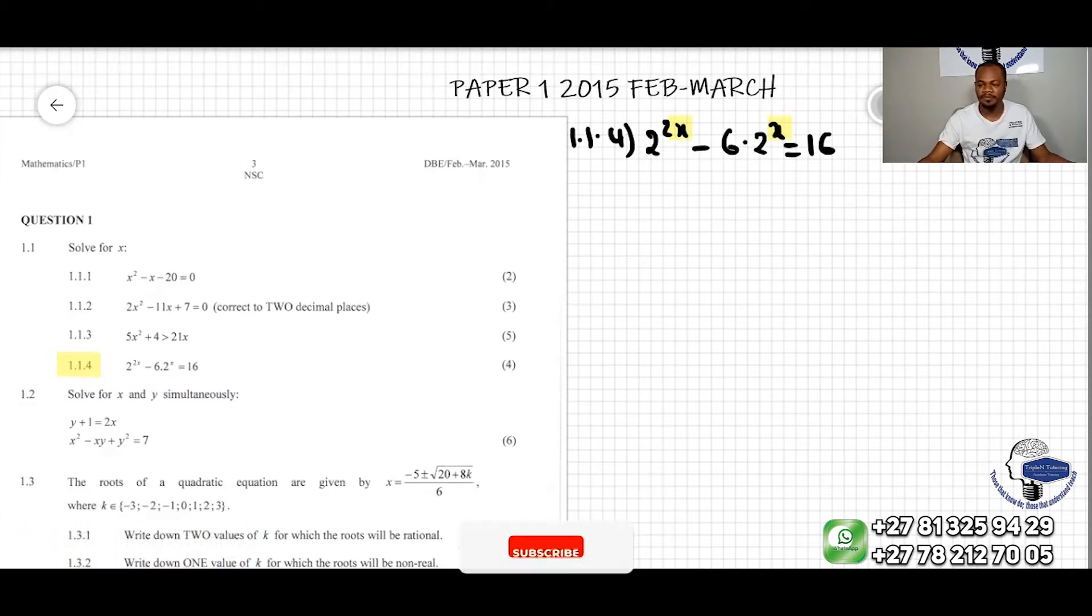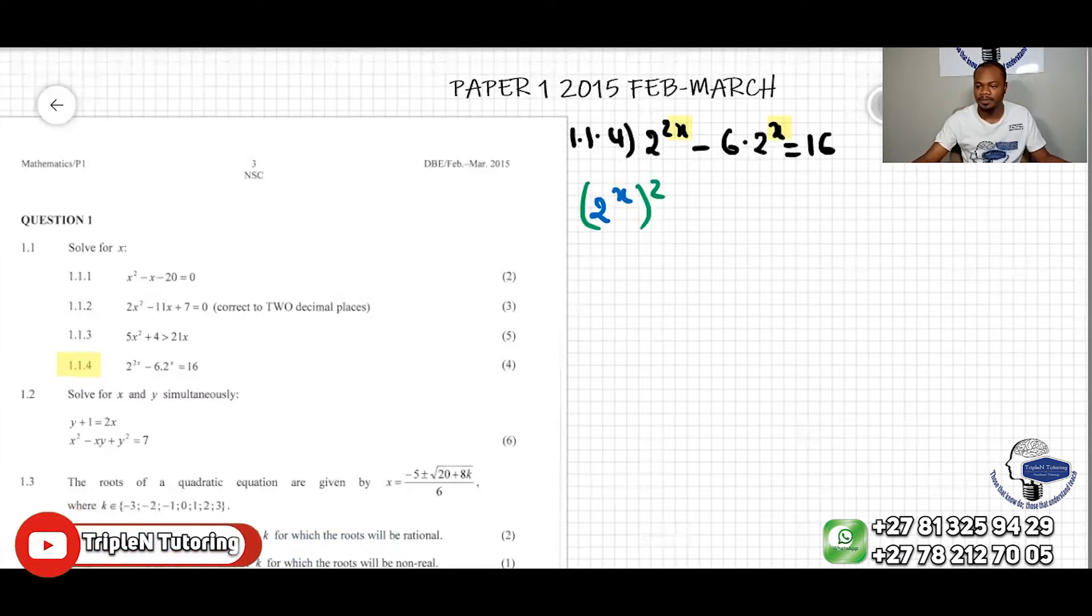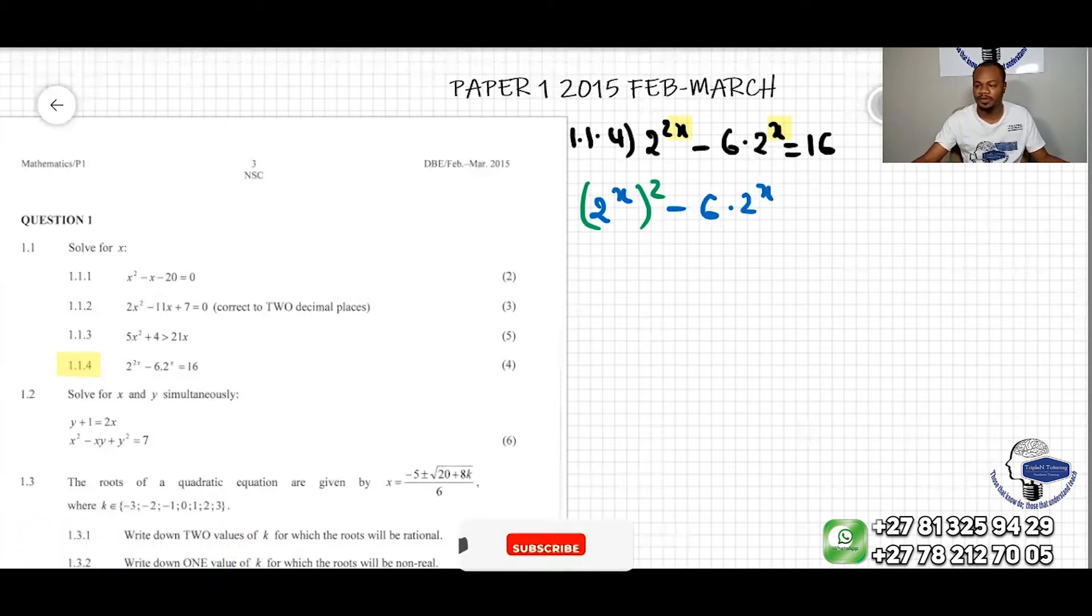I prefer to rewrite the same equation this way. I am going to write 2 to the x, all this to the power of 2, minus 6 times 2 to the x. If I move the 16 over, so negative 16 equal to 0.